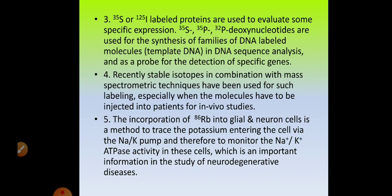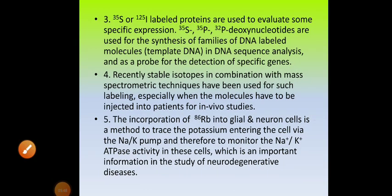Recently, stable isotopes in combination with mass spectrometric techniques have been used for such labeling, especially when the molecule has to be injected into patients or for in vivo studies. When tracing the path of any atom or element passing through the body of patients, we prefer using stable isotopes. Stable isotopes in combination with mass spectrometric techniques are injected into patients for in vivo studies.